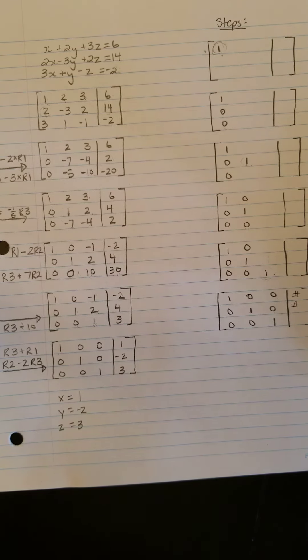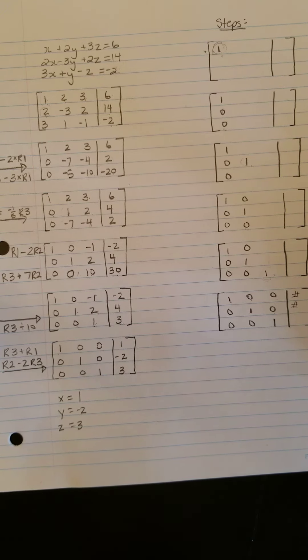But again, just be really super careful about not making little mistakes. Watch your negative signs. Watch your arithmetic here. Because one little mistake, like you can probably see, will just follow all the way through, and it's pretty easy to do.